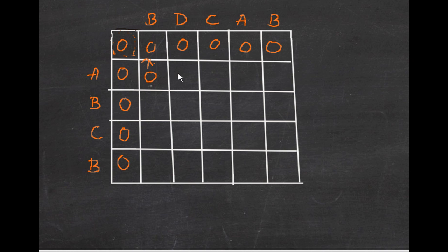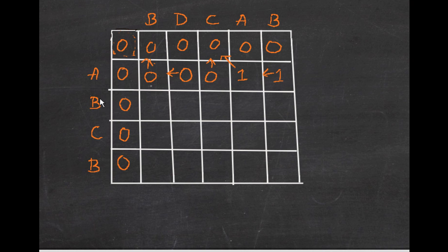A and D do not match — take the maximum from the left, so 0. A and C do not match — take the maximum, so 0. But A and A match! So the arrow points diagonally because we increment the number at C[i-1][j-1] by one — 0 plus 1 is 1. Then A and B do not match, so we take the maximum from here, which is 1.